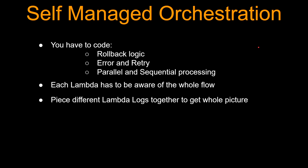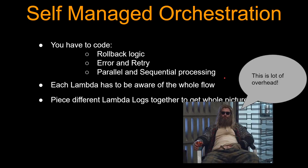So what is the problem with that? Well, if you code everything, you also have to code the rollback logic, error and retry, parallel, conditional, sequential processing — and each Lambda has to be aware of the whole flow. When I talk about rollback logic and error and retry, it's not just rolling back or retrying the particular Lambda; you have to do that for the whole flow. And another problem is, if you code individual Lambdas and something goes wrong, you have to piece different Lambda logs together to get the whole picture. This gets out of hand pretty quickly.